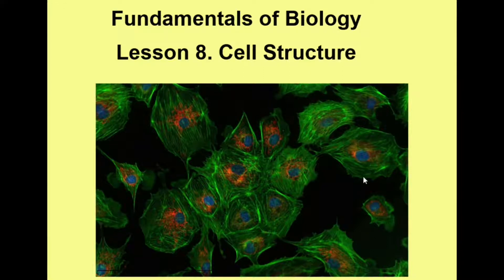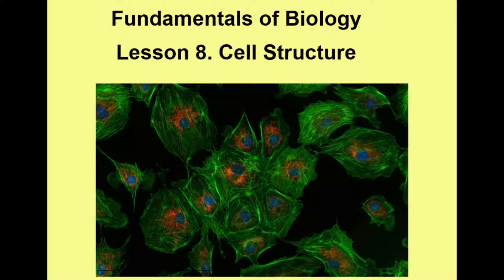Hello there, welcome to Fundamentals of Biology, Lesson 8, where we're going to be looking at cell structure. So we're taking a leap up in terms of size and complexity from what we've covered previously. So far we've looked at atomic structure and chemical bonds, then the four classes of biological molecules: carbohydrates, lipids, nucleic acids, and proteins. And then in the last session, we looked at a special type of protein called enzymes that are biological catalysts.